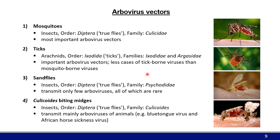The main arbovirus vectors are mosquitoes, ticks, sand flies, and Culicoides biting midges. Mosquitoes are the most important arbovirus vectors. Ticks are also really important and transmit numerous viruses across the world; however, they do not feed on humans as much as mosquitoes, so case numbers are a bit lower. We are generally considered dead-end hosts for both ticks and the arboviruses they transmit, because we will see the tick and remove it.